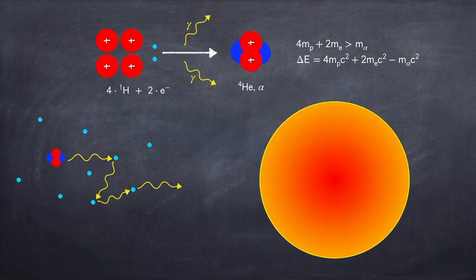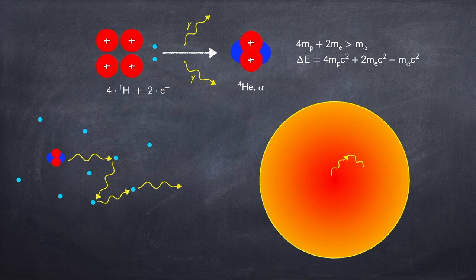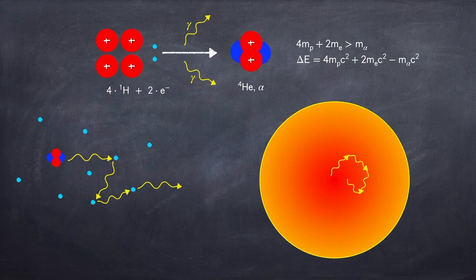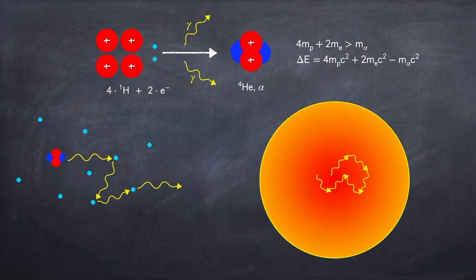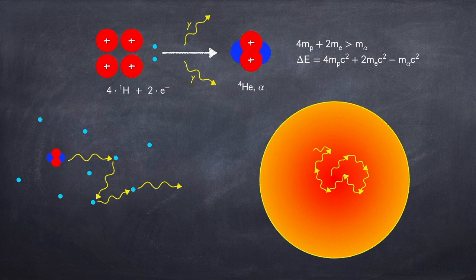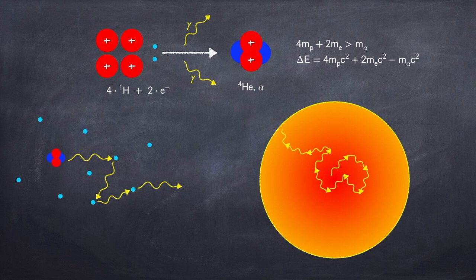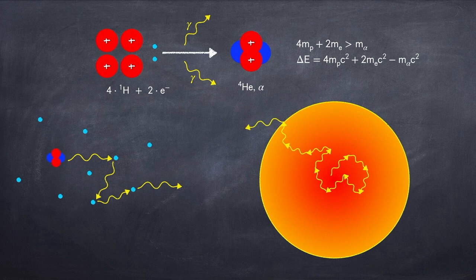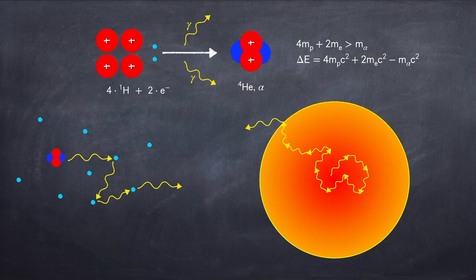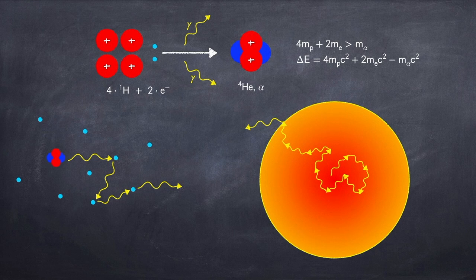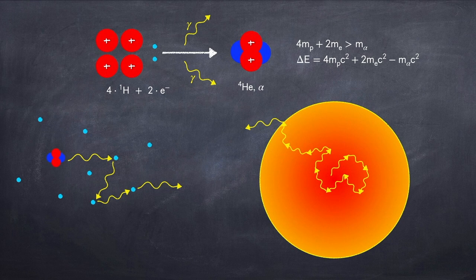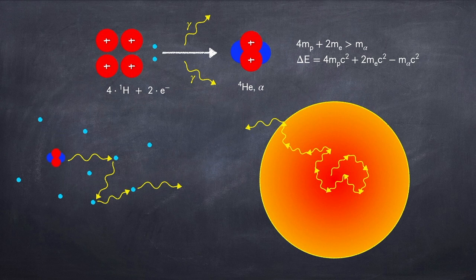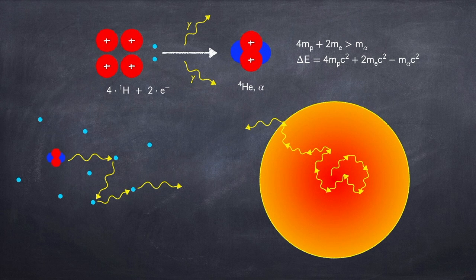So when a photon is released inside of a star, it will randomly scatter from one electron to another, meandering its way around inside of the star until it eventually reaches its surface. At that point, it will free stream into empty space. This meandering trajectory is called the photon random walk, and we're going to calculate how long it takes for a photon created in the center of a star to random walk its way to its surface.